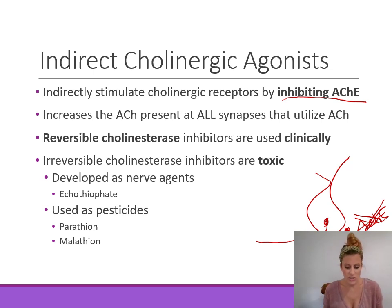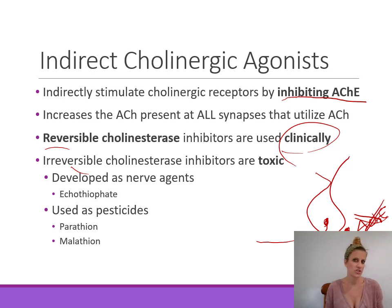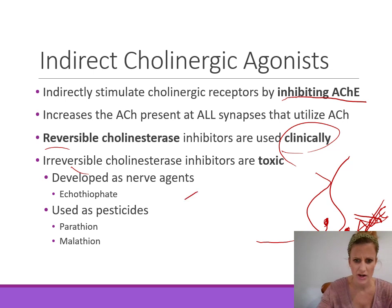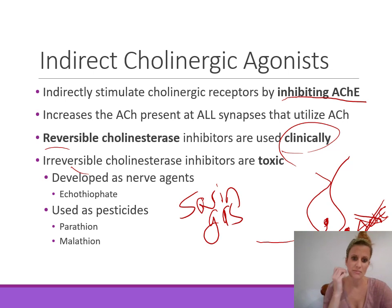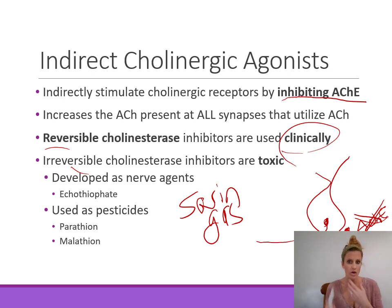Acetylcholinesterase inhibitors can be reversible or irreversible. Reversible cholinesterase inhibitors are used clinically — for myasthenia gravis and Alzheimer's disease. Irreversible cholinesterase inhibitors are toxic and not used clinically. These were developed as nerve agents — for example, sarin gas and ecothiophate were developed for chemical warfare. Some organophosphate pesticides such as parathion and malathion are also irreversible cholinesterase inhibitors.